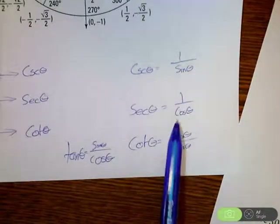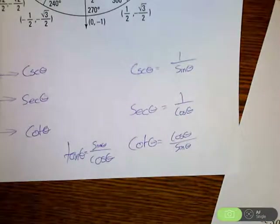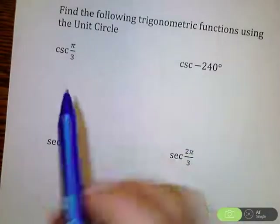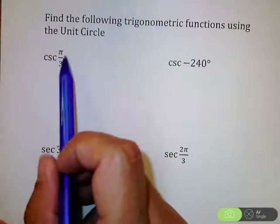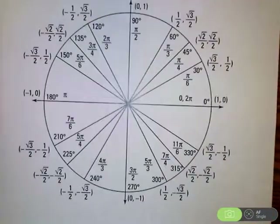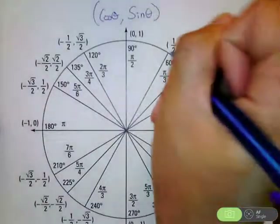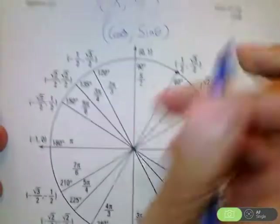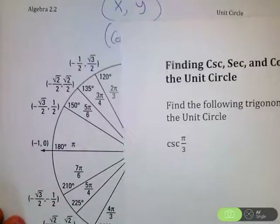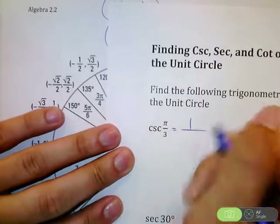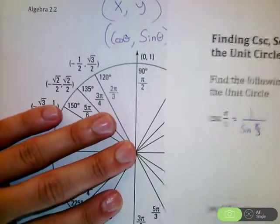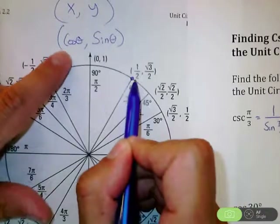If you know sine and cosine, you can pretty much accomplish any of these other trig functions. So here we go. I'm starting with cosecant of pi over three. Referencing our unit circle, if I look for pi over three, we're right up here. Remember, cosine is the x and sine is the y. So if I want cosecant of pi over three, we're going to find one divided by sine of pi over three. Sine of pi over three — cosine is x, sine is y.